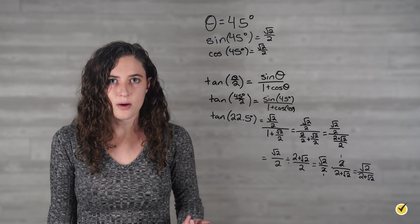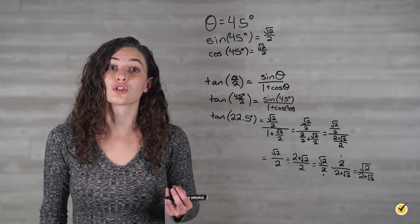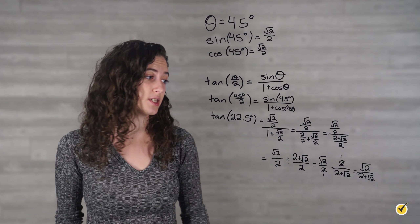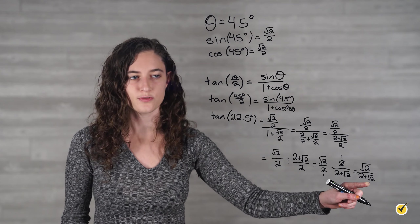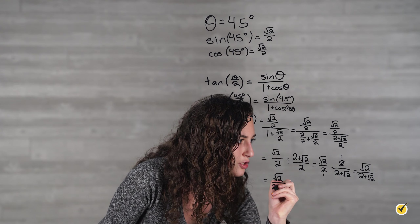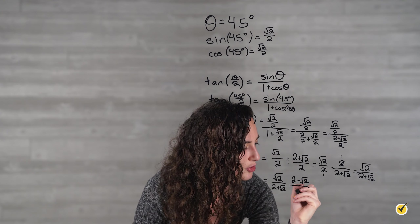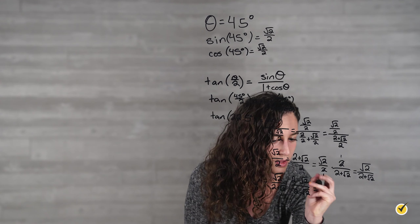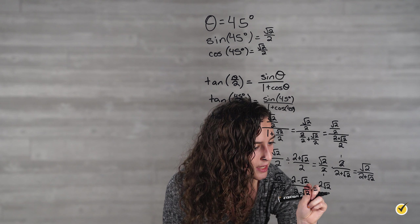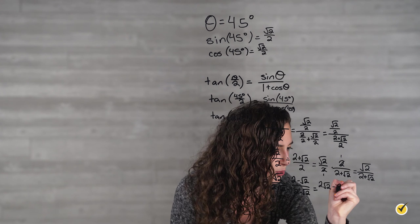Finally, we have to rationalize our denominator by multiplying the top and bottom of our answer by the conjugate of the denominator, which looks just like the denominator but has the opposite sign between the two terms. Our denominator is 2 plus the square root of 2, so we multiply by 2 minus the square root of 2 over 2 minus the square root of 2. Multiplying 2 times the square root of 2 gives 2 square root of 2. And multiplying negative square root of 2 by the square root of 2 gives negative square root of 4, and the square root of 4 is 2, so minus 2.